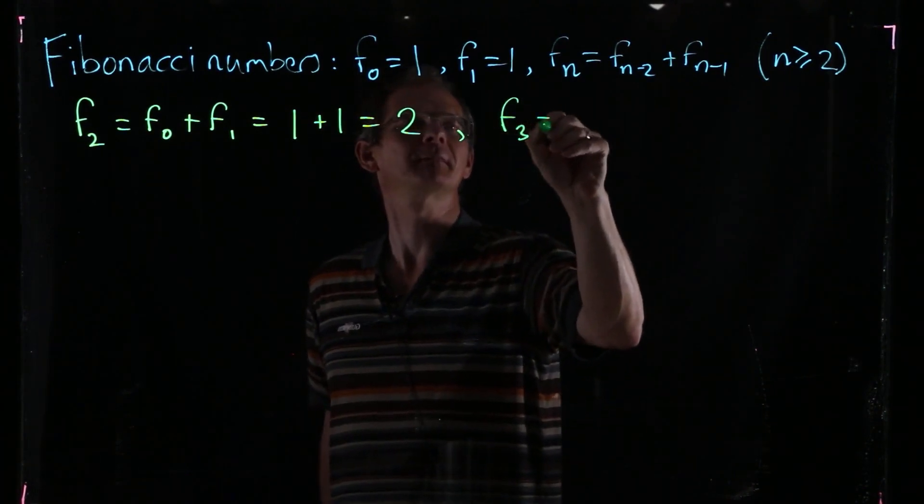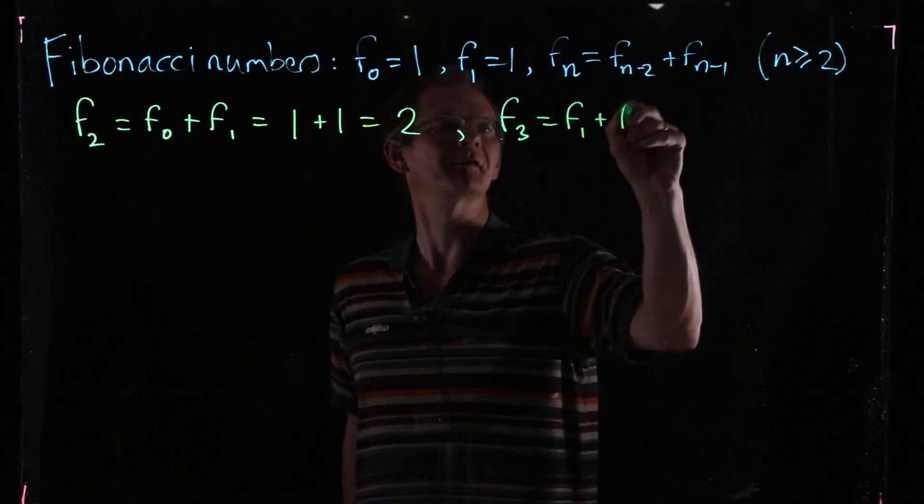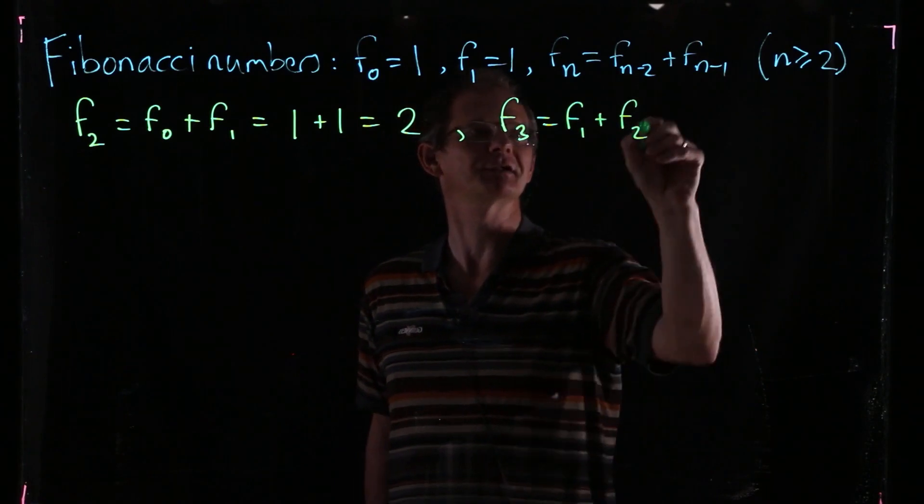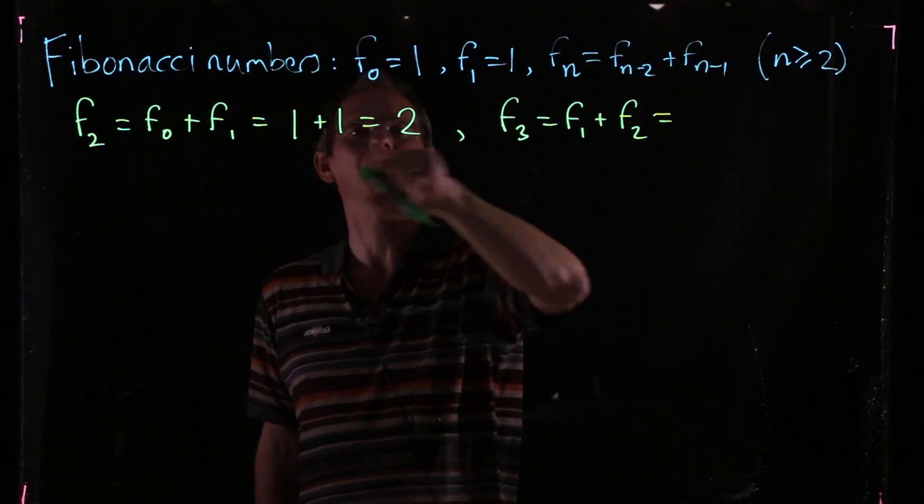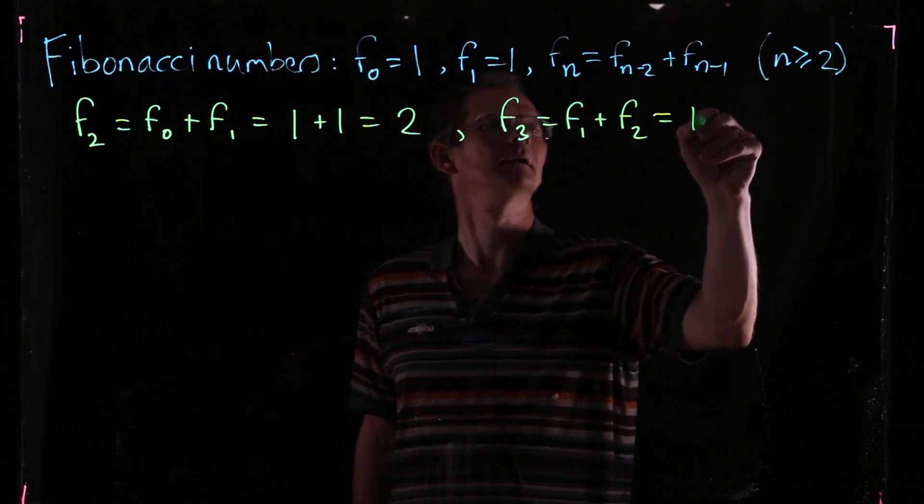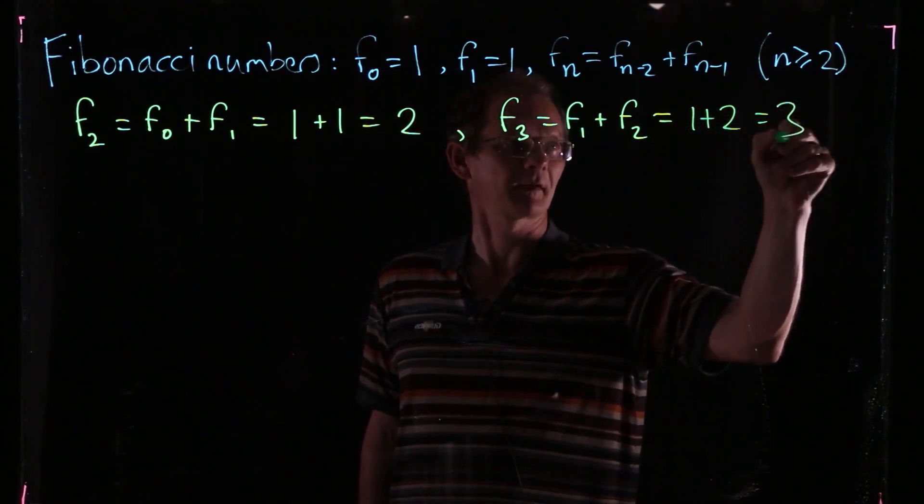And then if you want F3, that's going to be F1 plus F2, the sum of the previous two Fibonacci numbers. So F1 was 1 and F2 was 2, so that's 3.